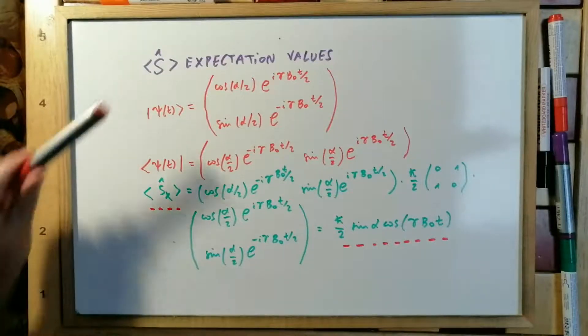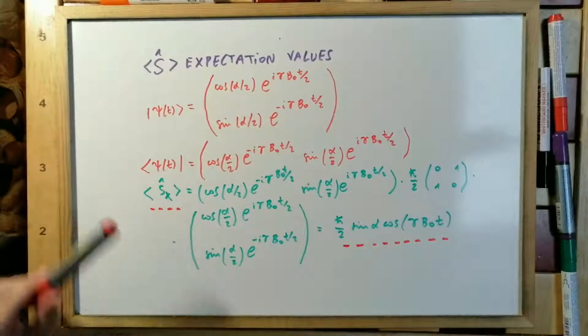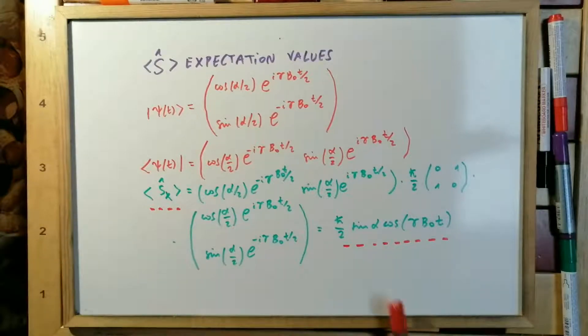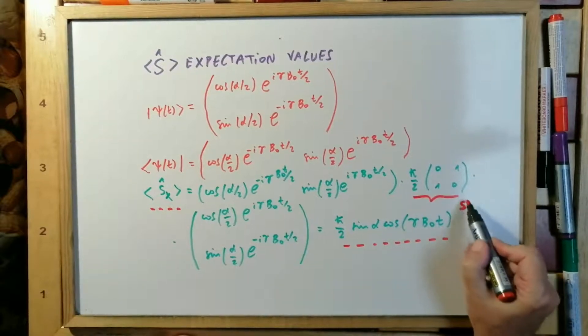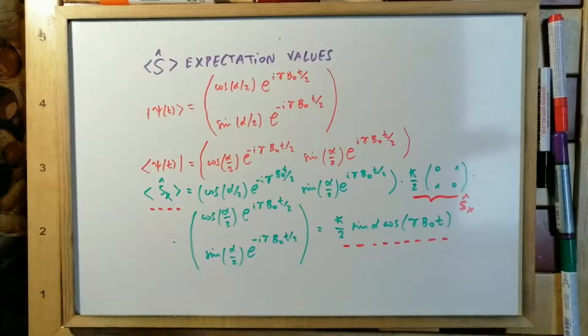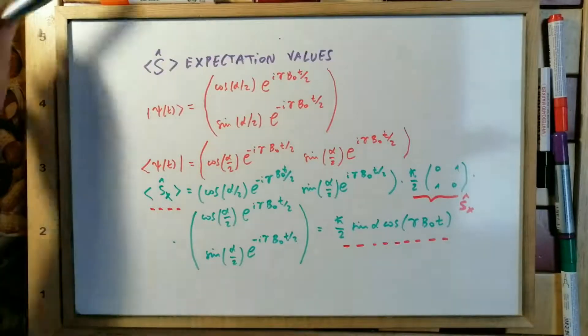This is the expectation value for the SX Pauli matrix. And here is the result. We have put as usual in bra and ket notation with the SX Pauli matrix here. Now we look for other values.